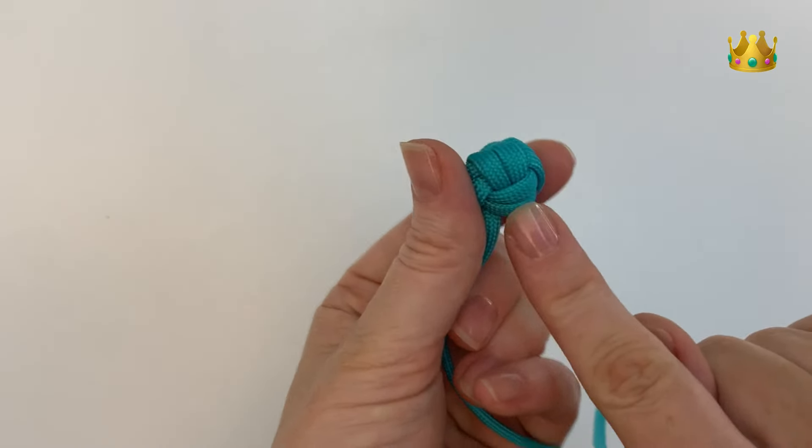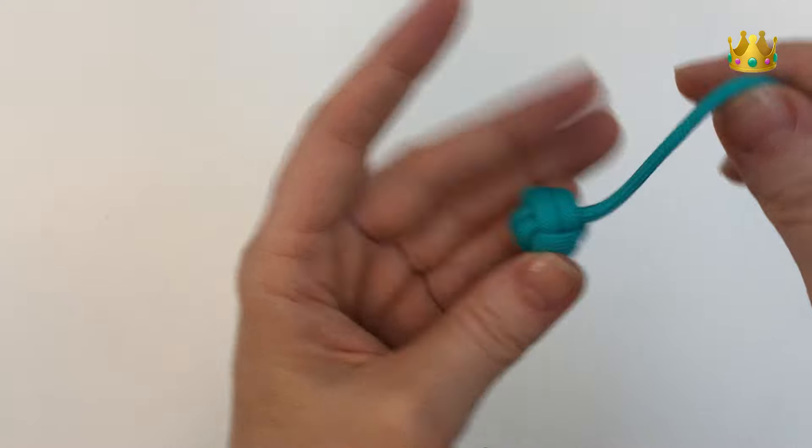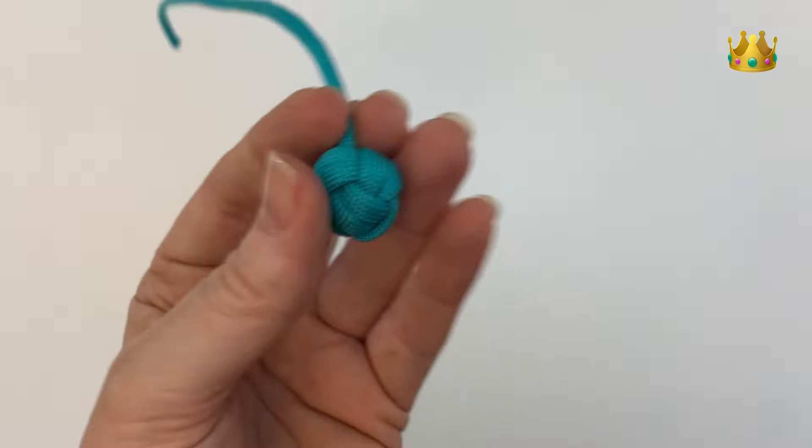Hey guys, welcome back. In this video we're making a mini monkey fist knot. This design has two layers of paracord that go on each angle in the monkey fist knot.